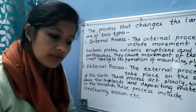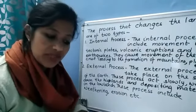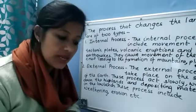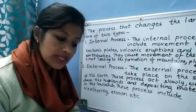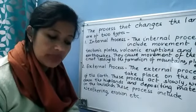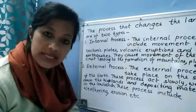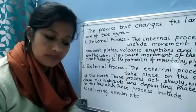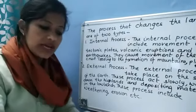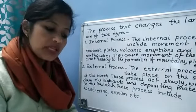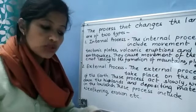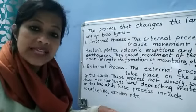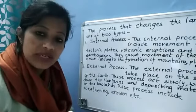What is magma? Due to high temperature in the interior of the earth, the rocks are in a molten state. This molten material is called magma. Two examples of sedimentary rocks are sandstone and limestone.